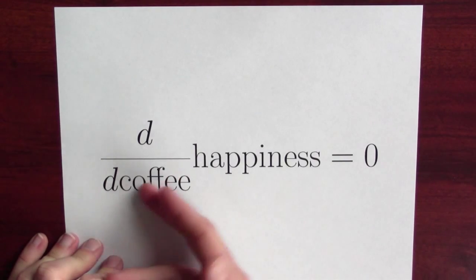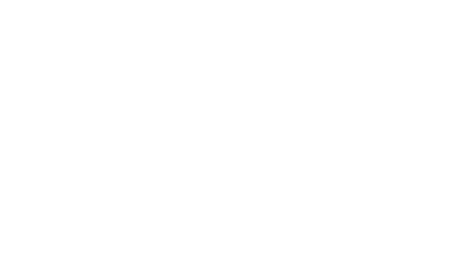Not very much coffee, the derivative might be positive. But after a certain point, you might find that the derivative vanishes. This seems like a silly example. Coffee and happiness.